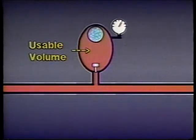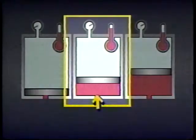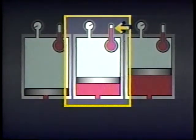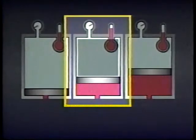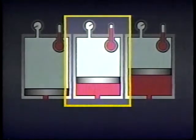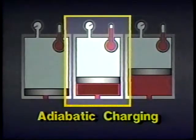The usable volume in an accumulator depends on how quickly the accumulator is filled with fluid, how rapidly it is discharged, and on the pressure of the pre-charged gas. When an accumulator is filled with fluid quickly, the gas pre-charge heats up as it compresses and so it occupies more space in the accumulator than if it had remained cool. The more space the gas pre-charge takes up, the less usable volume there is for the fluid to occupy. This is called adiabatic charging.